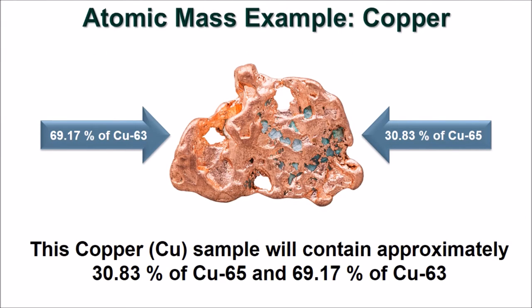A naturally occurring copper sample will have about 69% of the copper 63 isotope and about 31% of the copper 65 isotope.